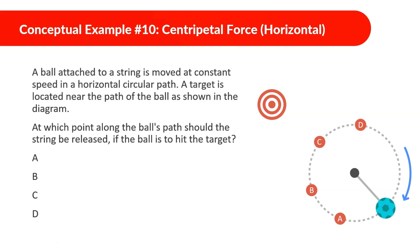Concept example number 10: a ball is attached to a string and is moved at a constant speed in a horizontal circular path. A target is located near the path of the ball as shown in the diagram. At which point along the path should the string be released if the ball is to hit the target? We see the ball going clockwise, so where should it be released?